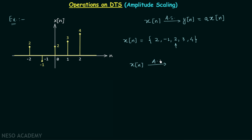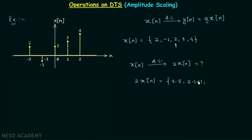Let's say we perform amplitude scaling with A = 2, so we need to find 2Xn. The process is simple — we multiply 2 on both sides: 2×2, 2×(-1), 2×2, 2×3, and 2×4.